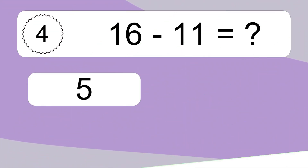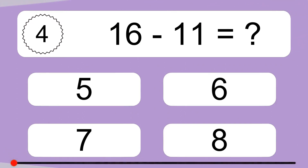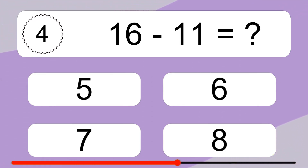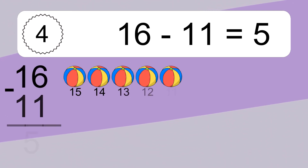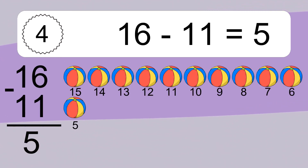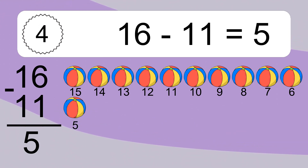16 minus 11 equals what? 16 minus 11 equals 5. Let's count it: 15, 14, 13, 12, 11, 10, 9, 8, 7, 6, 5.